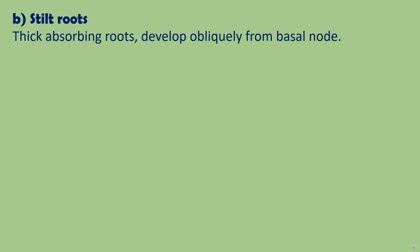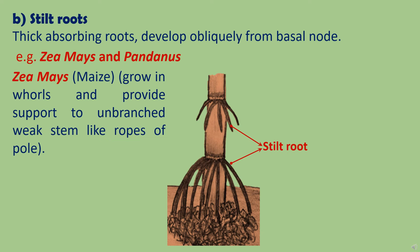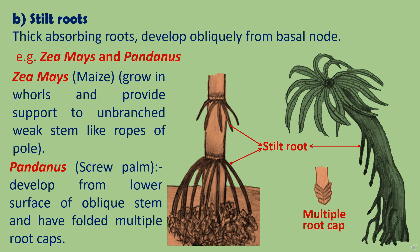Another type of supporting roots are stilt roots. These are thick absorbing roots and develop obliquely from the basal surface or node of a plant. Such type of roots are found in maize and pandanus. Stilt roots found in the maize plant grow in whorls and provide support to the unbranched weak stem like ropes of a pole. Whereas in the pandanus plant, they develop from the lower surface of the oblique heavy stem as shown in the picture. Stilt roots in the pandanus plant have multiple root caps so that they do not get peeled off due to friction with the soil when they grow old.